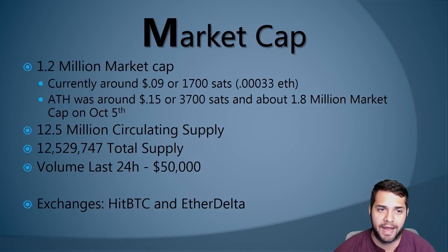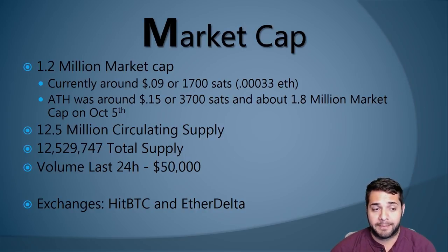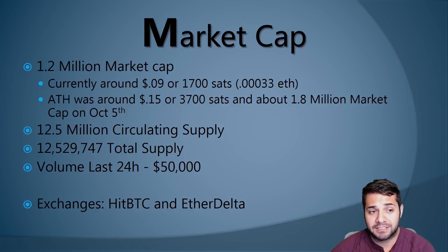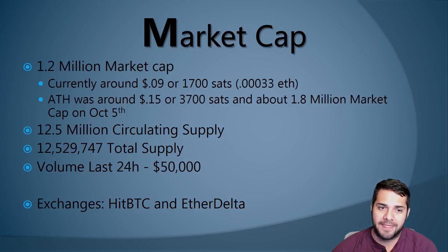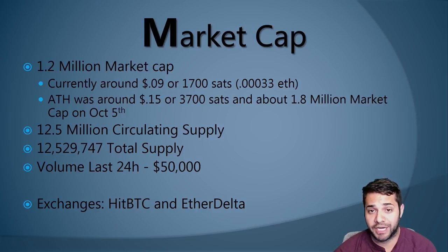Now for their market cap — this is where I believe the gem comes in. They're currently sitting at $1.2 million, around $0.009 or 1,700 sats. The all-time high was around $0.15 or 3,700 sats, about $1.8 million market cap on October 5th. They have $12.5 million circulating supply and total supply is pretty much the same. The 24-hour volume is only $50,000 — that's kind of low, but this is just because the coin is so unknown and it's stuck on HitBTC and EtherDelta. Once they get on a better exchange the volume could easily shoot up. I asked the team about that and they said they've emailed several other exchanges and are waiting for a response.